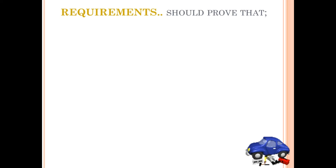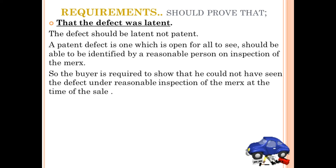Under latent defects, the buyer is required to prove the following. First, that the defect was latent, not patent. A patent defect is one which is open for all to see and can be identified by a reasonable person on inspection of the thing during the sale. The buyer must show that he could not have seen the defect under reasonable inspection of the thing at the time of sale.